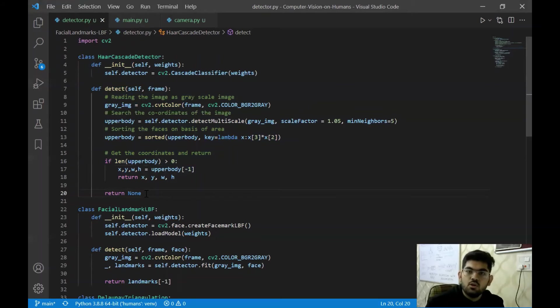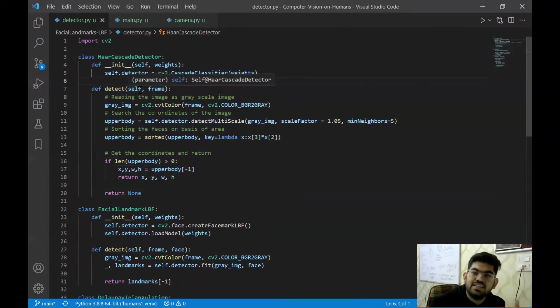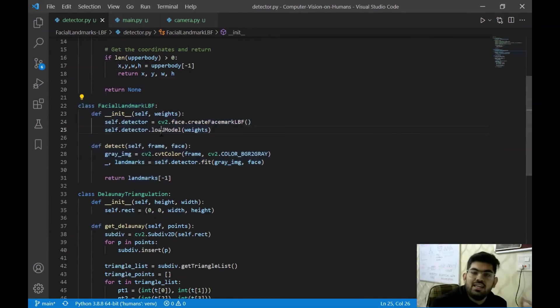Briefly, the work of the HAAR cascade detector is to detect faces in a given camera image. Once those faces have been detected, then we can apply the local binary features technique to get the facial landmarks on our face. So this is the class that contains the code for the HAAR cascade detector. We are using the OpenCV library to detect the faces in an image, which we can see over here. The pre-trained weights have been downloaded from their GitHub repository and we are using them over here. In this class, we have a detect function that returns the coordinates of the face that it has detected, which are the X coordinate of the center, the Y coordinate of the center, the width of the detection and the height of the detection.